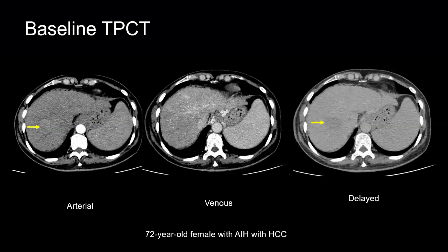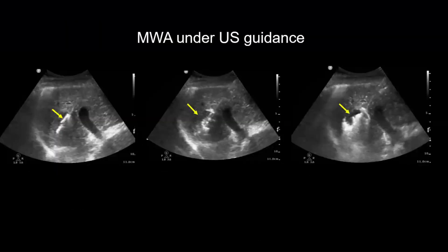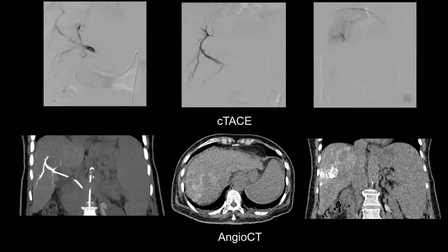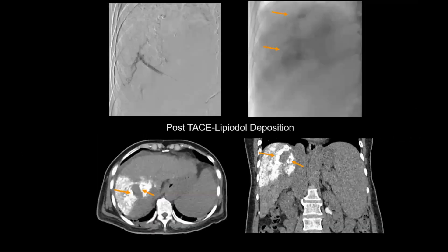Case scenario four is a post-ablation recurrence: a 72-year-old female with autoimmune hepatitis and HCC. A hypervascular lesion with washout and a subtle capsule was identified, and microwave ablation was done under ultrasound guidance, with evolving air bubbles visible within the tumor. On follow-up, the patient developed a local recurrence. Post-ablation recurrences are typically irregular and nodular with vague margins. You can appreciate the washout in the delayed phase. We chose conventional TACE for this patient. Selective vascular runs and cone-beam CT show the distribution of contrast around the treated lesion, and the post-lipiodol deposition images with orange arrows show lipiodol deposition in the nodularity of the local recurrence around the lesion, confirming good uptake of lipiodol and drug.